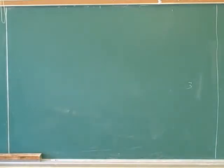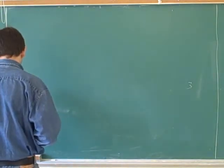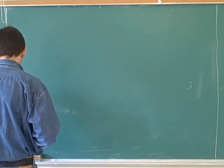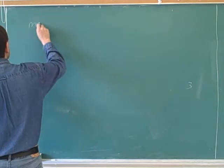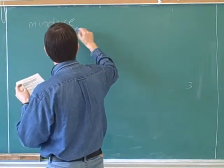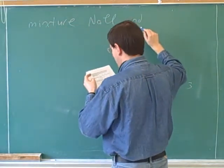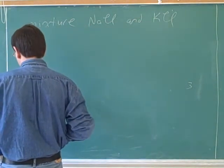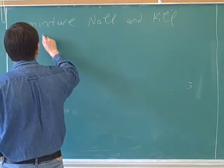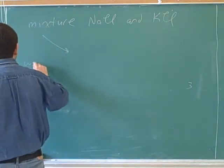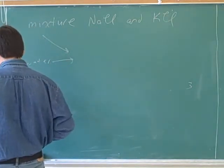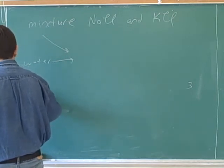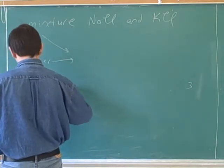Taking a look at number 10, we have sodium chloride and potassium chloride. We have a mixture that contains sodium chloride and potassium chloride, and we're going to put that in water, and we're also going to add silver nitrate — excess silver nitrate.